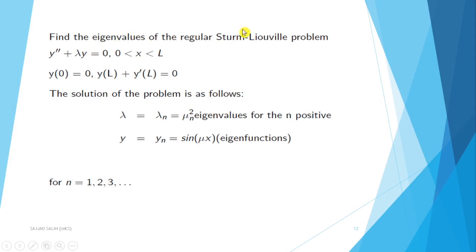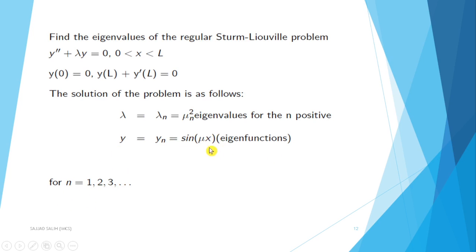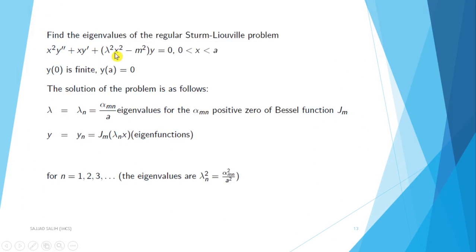Find the eigenvalues of the regular Sturm-Liouville problem: y double prime plus lambda y equals 0, for 0 less than x less than L, with boundary condition y(0) equals 0. The solution gives eigenvalues lambda n equal to mu squared n, and the corresponding eigenfunctions are also determined for n equals 1, 2, and so on up to n.